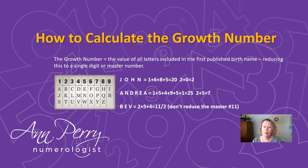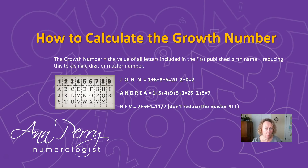How to calculate the growth number is very simple. We're going to calculate the value of all the letters associated with your first published birth name, reducing this to a single digit or a master number. For example, if a person's name was Andrew John Edwards but he goes by John, that doesn't count — Andrew would count in that case. So it's the first published birth name that we're looking at.